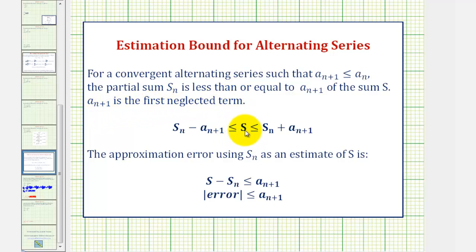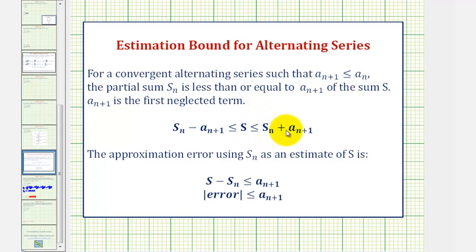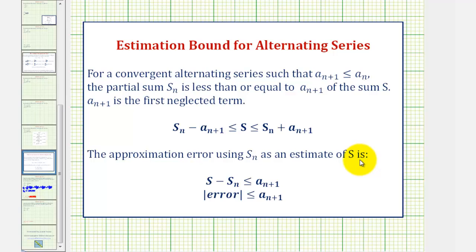So the infinite sum S will always be greater than or equal to the partial sum minus A sub N plus one, and less than or equal to the partial sum plus A sub N plus one. So the approximation error when using the partial sum as the estimate of the infinite sum S can be found by determining A sub N plus one.